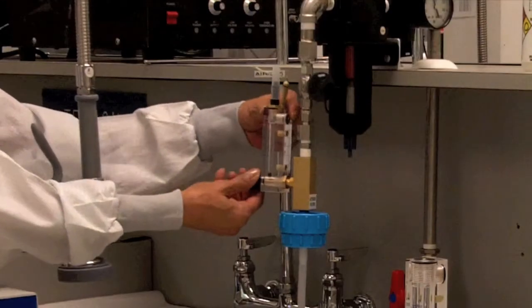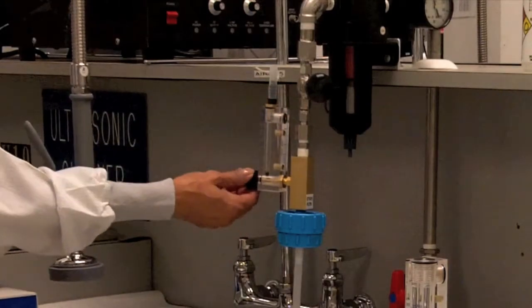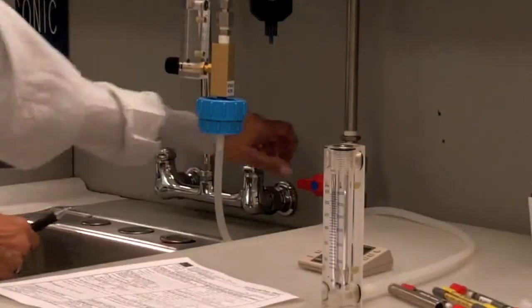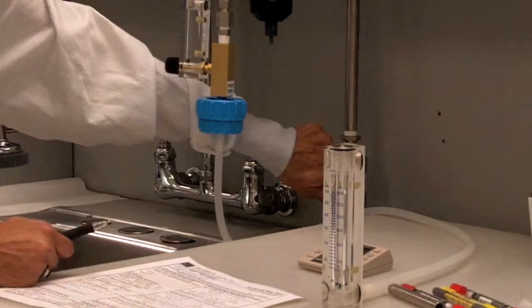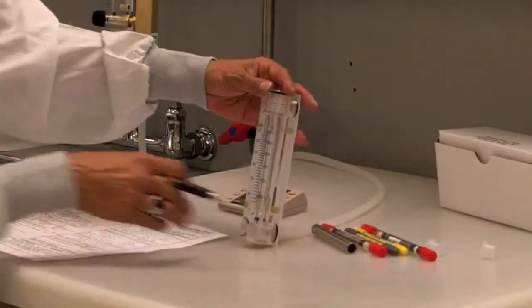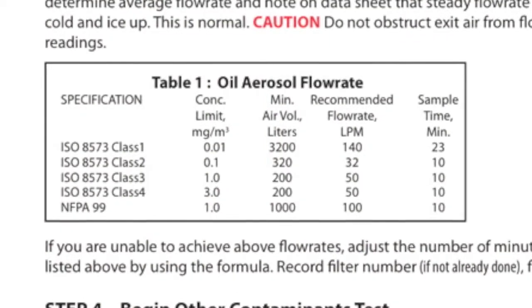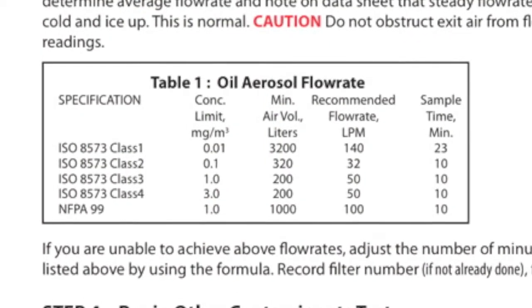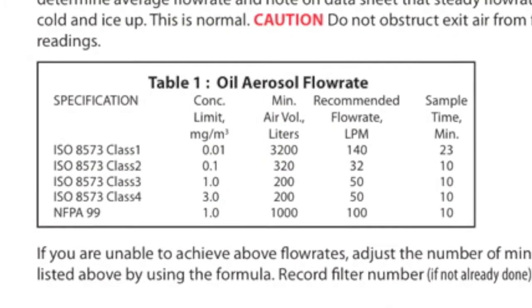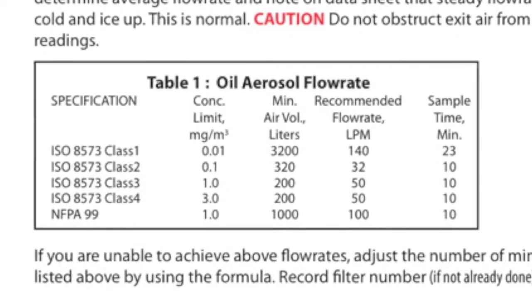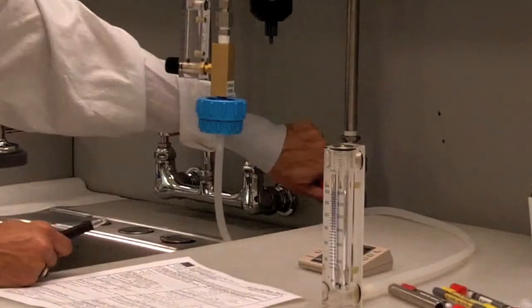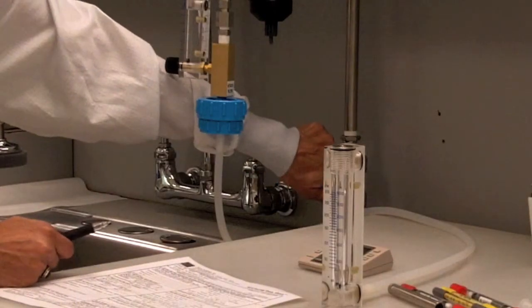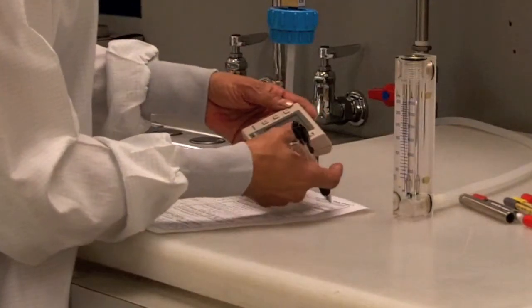Make sure the needle valve on the tube flow meter is closed. Slowly open your system valve to obtain the flow rate on the filter flow meter. Flow rates vary from 32.50 to 140 liters per minute. Adjust air flow to obtain the correct flow rate for your purity class and begin the first timer.